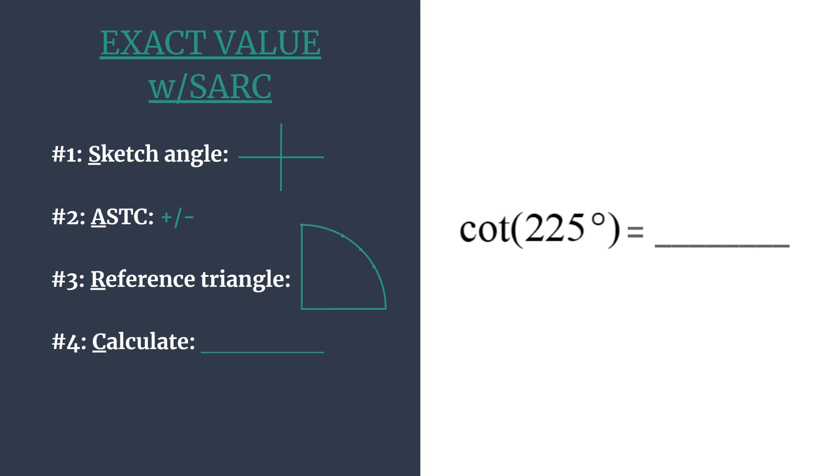All right let's start by sketching the angle. Positive 225 will rotate in the counterclockwise direction since it's a positive angle: 0, 90, 180, and 270. So 225 falls halfway between 180 and 270. Our terminal side is right here in the third quadrant.